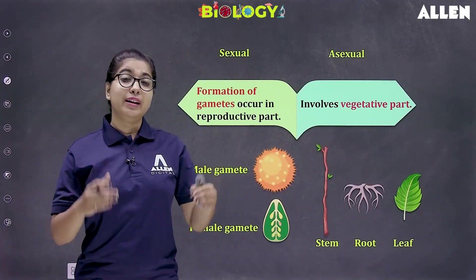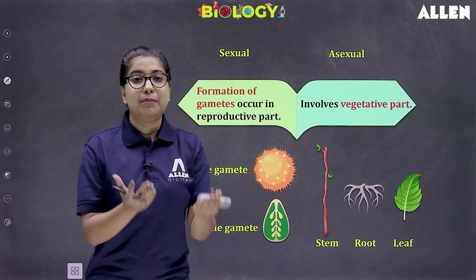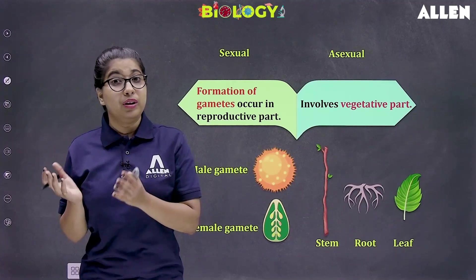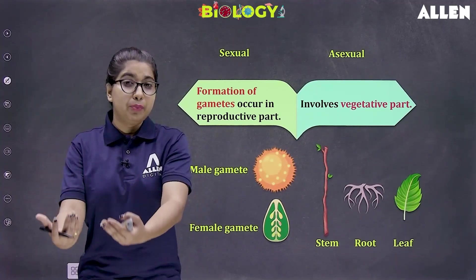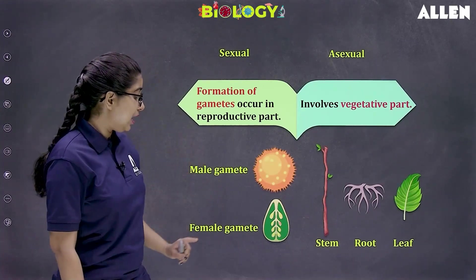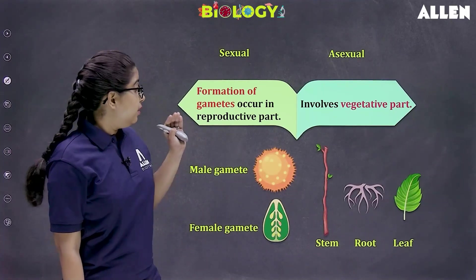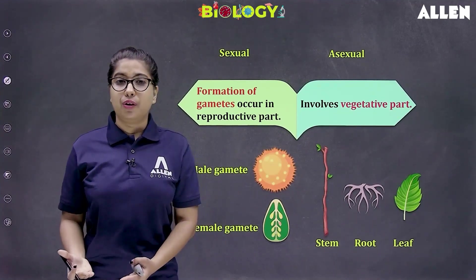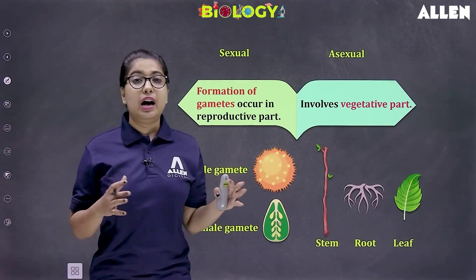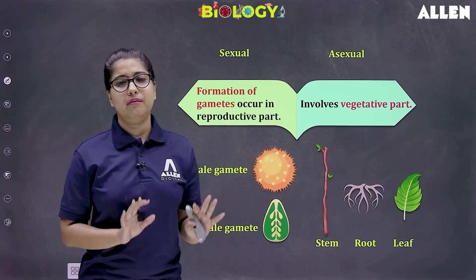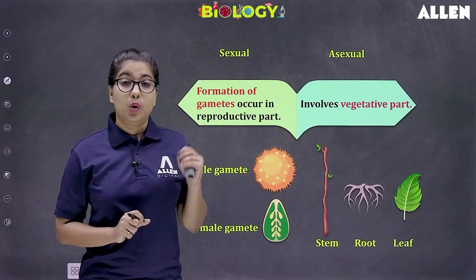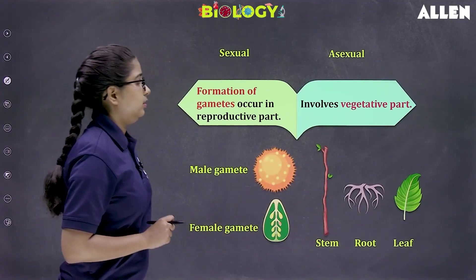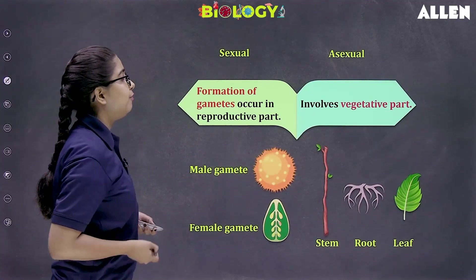What are the vegetative parts and what are the reproductive parts? The plant body can be divided into two parts: reproductive parts and vegetative parts. The reproductive part, which is directly involved in sexual reproduction, is the flower. The flower has the female part and the male part where the formation of female and male gametes occur respectively. So flowers are the reproductive organs of the plant. The vegetative parts — stem, root, leaves, buds — these are not directly involved in sexual reproduction.